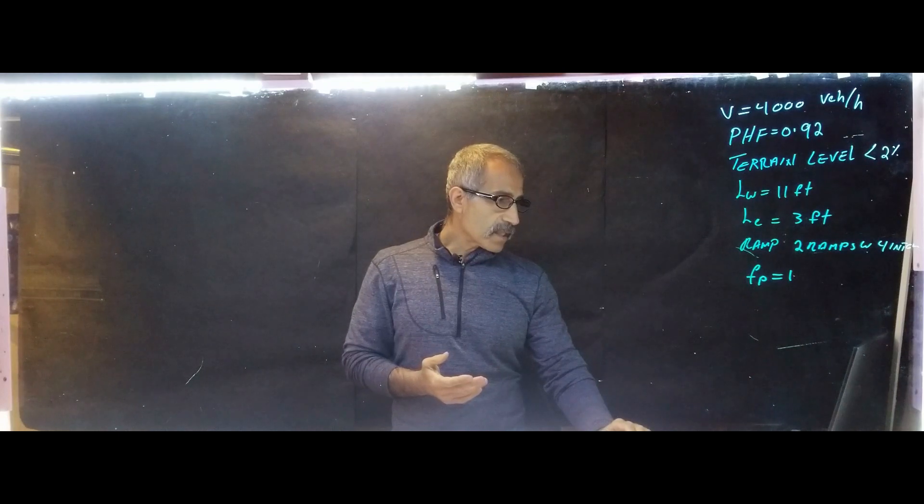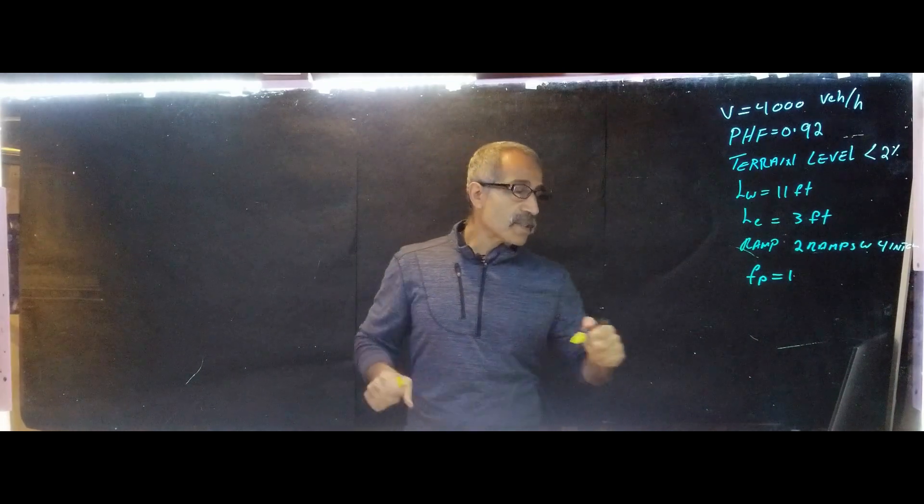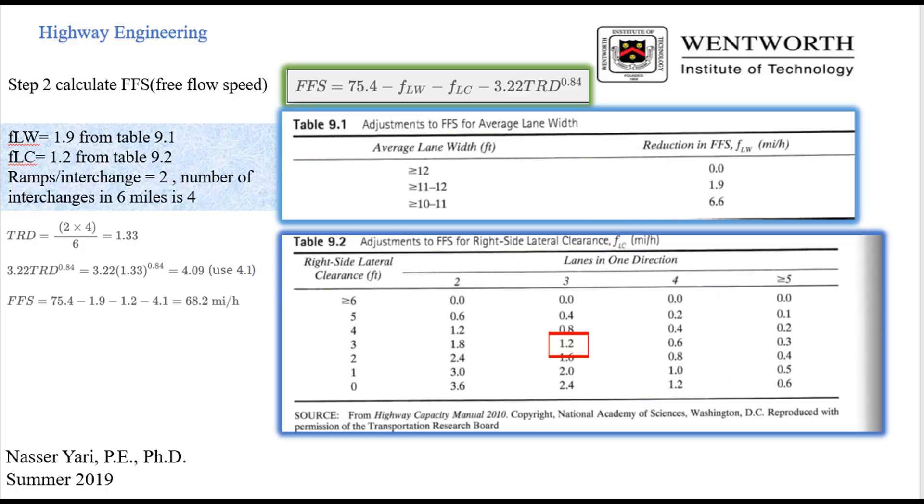Let's move to step two. Step two is calculating the FFS, which we already have. It's right there. And we say FFS is equal 75.4 minus FLW and minus FLC and minus 3.2 times TRD and that by power 0.84. So if we go to table 1.9 from, this is from a highway capacity manual, look at this table. And you can see our FLW comes out to become 1.9 because our lane width is 11 feet. And we see it says equal 11 right there. So that's where it become 1.9.